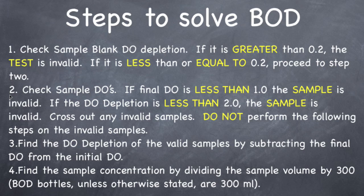So here are the steps to solve a BOD. You have to go in this order or else you're going to make mistakes. Step 1: check your sample blank DO depletion — the sample that is just DI water. If depletion is greater than 0.2, the test is invalid. If it is less than or equal to 0.2, proceed to step 2.